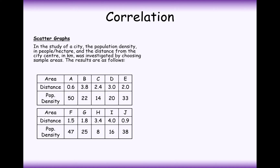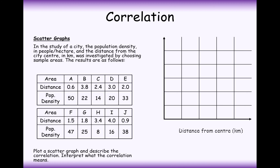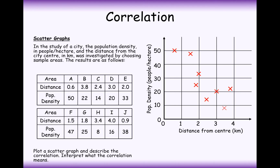Let's go through a little example. In a study, the population density — in other words, how many people there are per hectare of land — and the distance from the city centre was investigated by choosing sample areas. When the distance from the city centre is only 0.6 kilometres, we have a population density of 50 people per hectare. Let's draw a diagram with distance from the centre along the bottom, population density along the side, and plot all of these coordinates.